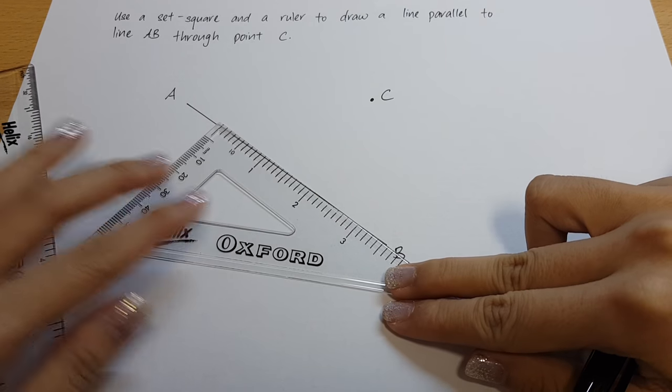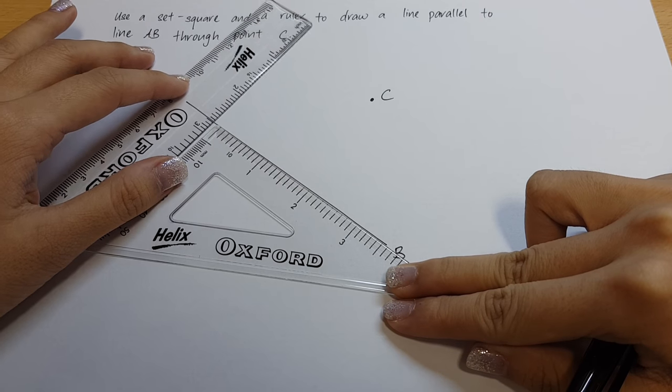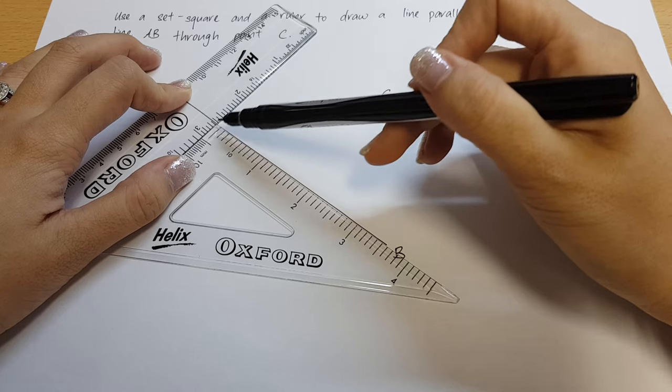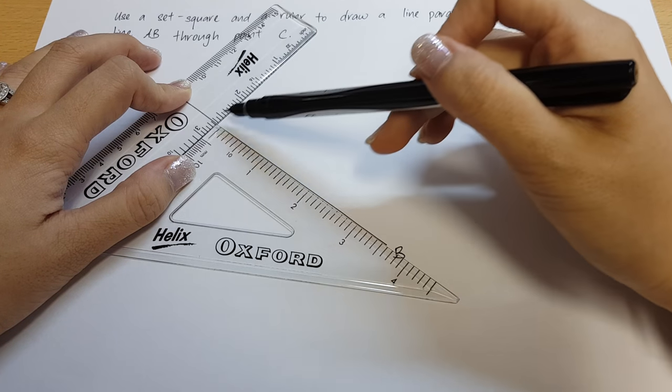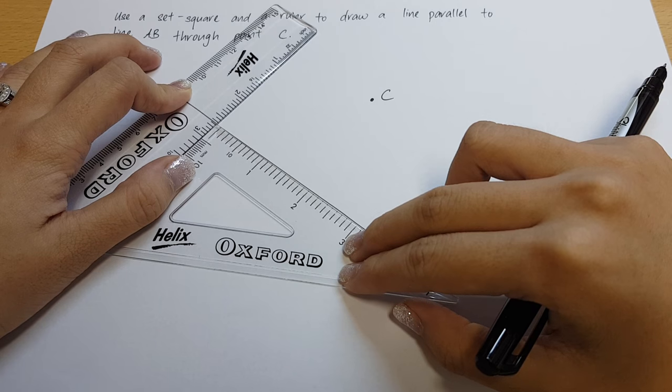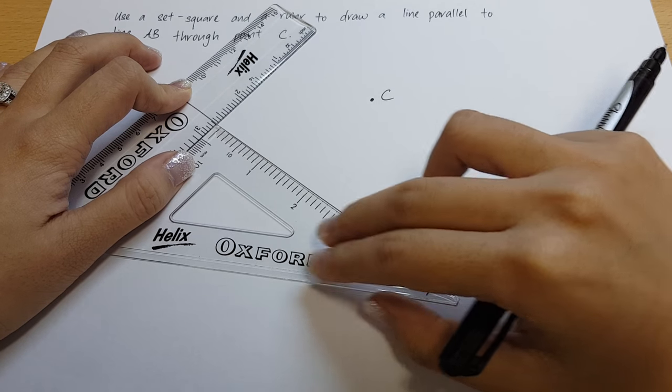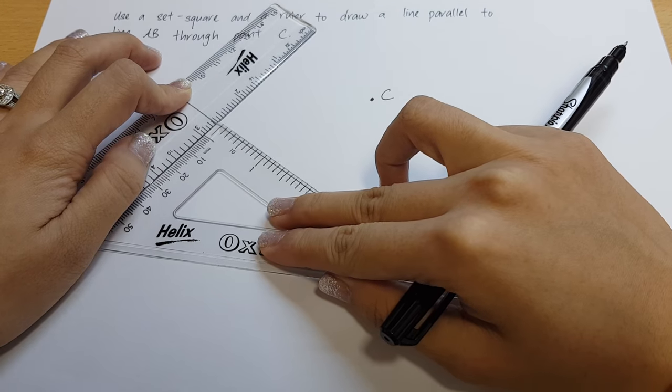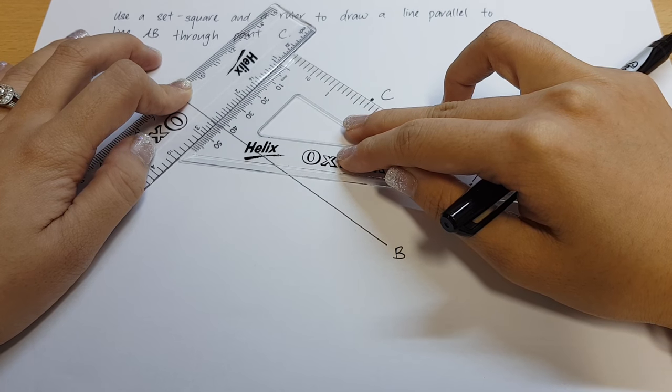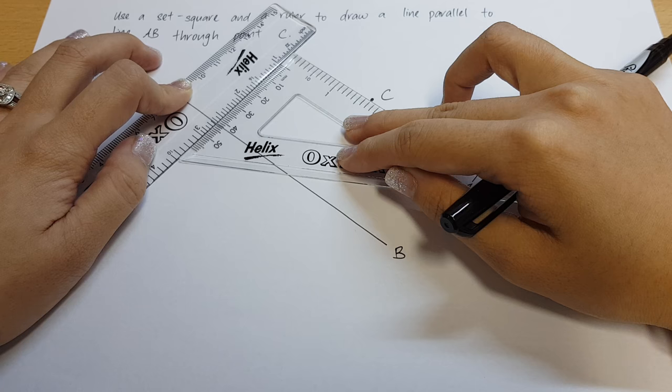Now, we will place the ruler next to the set square. We will form a right angle over here. Now, we imagine that the set square is travelling on a travelator, and we move the set square. We will stop only when the set square touches the point.